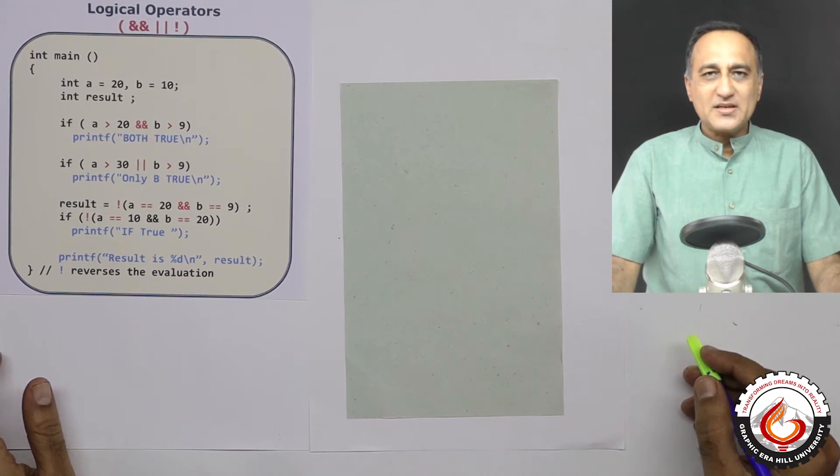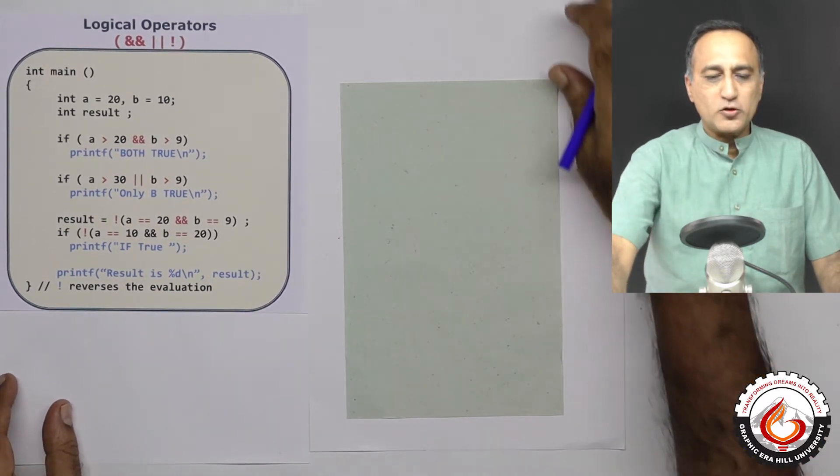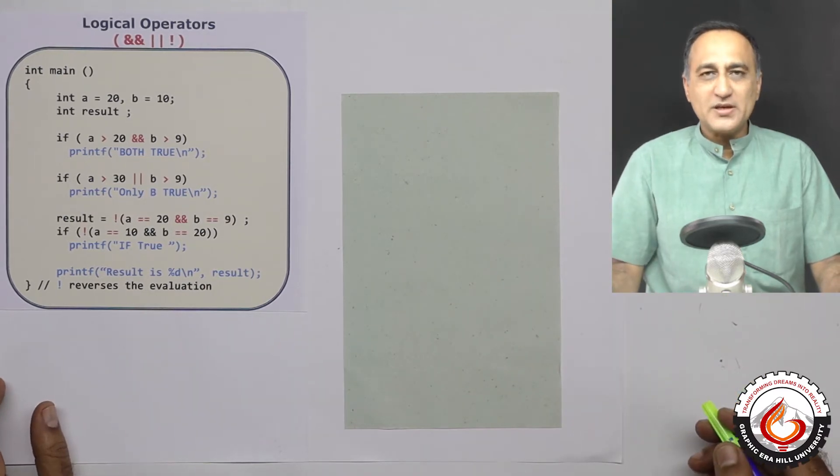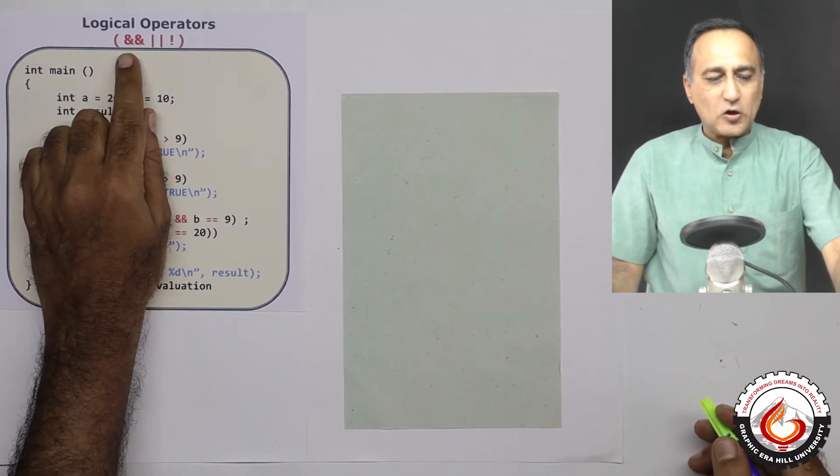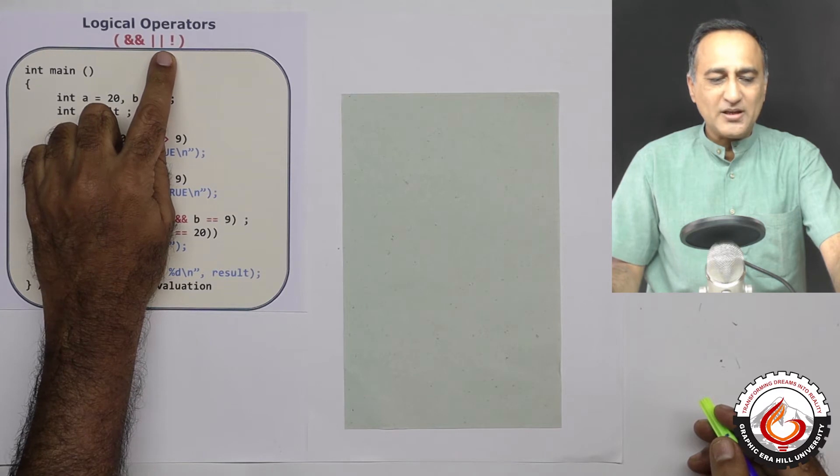The next group of operators is known as the logical operators. The result of evaluation of the logical operators also leads us to getting the answer true or false or Boolean values yes or no. The three logical operators are: this is called the logical and, this is called the logical or, and this is called the logical not.